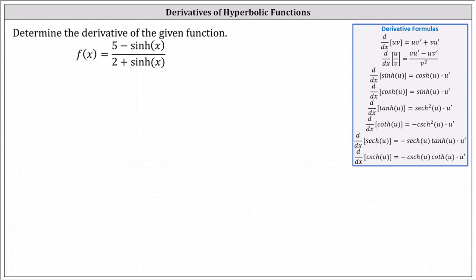Looking at the notes on the right, the derivative of u over v with respect to x equals v times u prime minus u times v prime, all divided by the square of v. To keep things organized, let's label the numerator u and the denominator v.